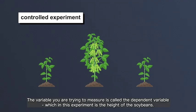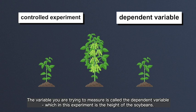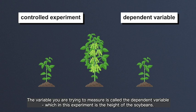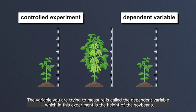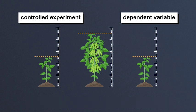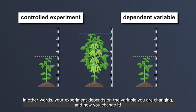The variable you are trying to measure is called the dependent variable, which in this experiment is the height of the soybeans. In other words, your experiment depends on the variable you are changing and how you change it.